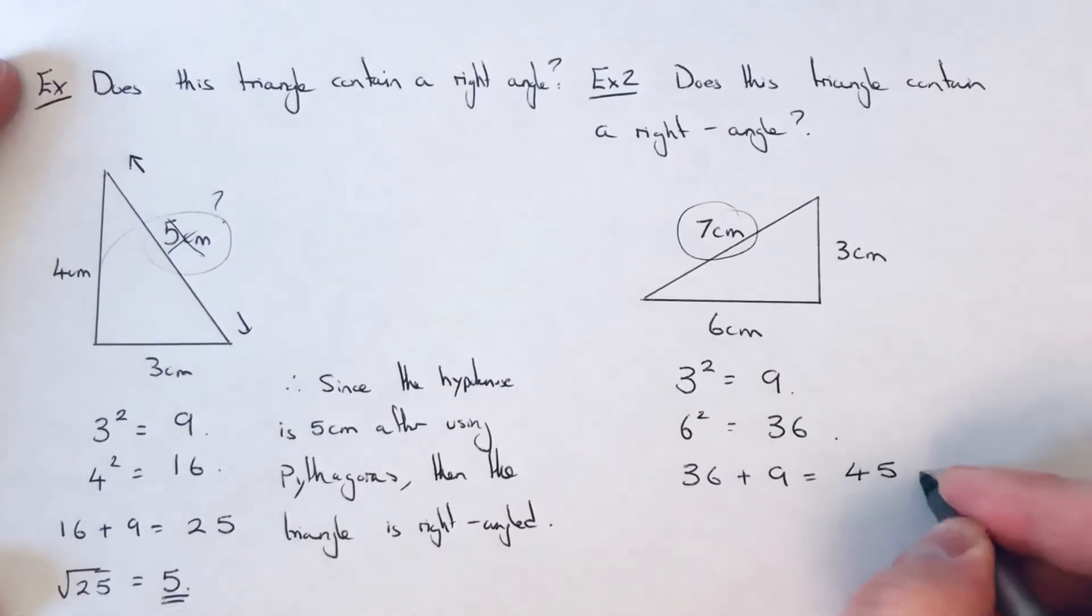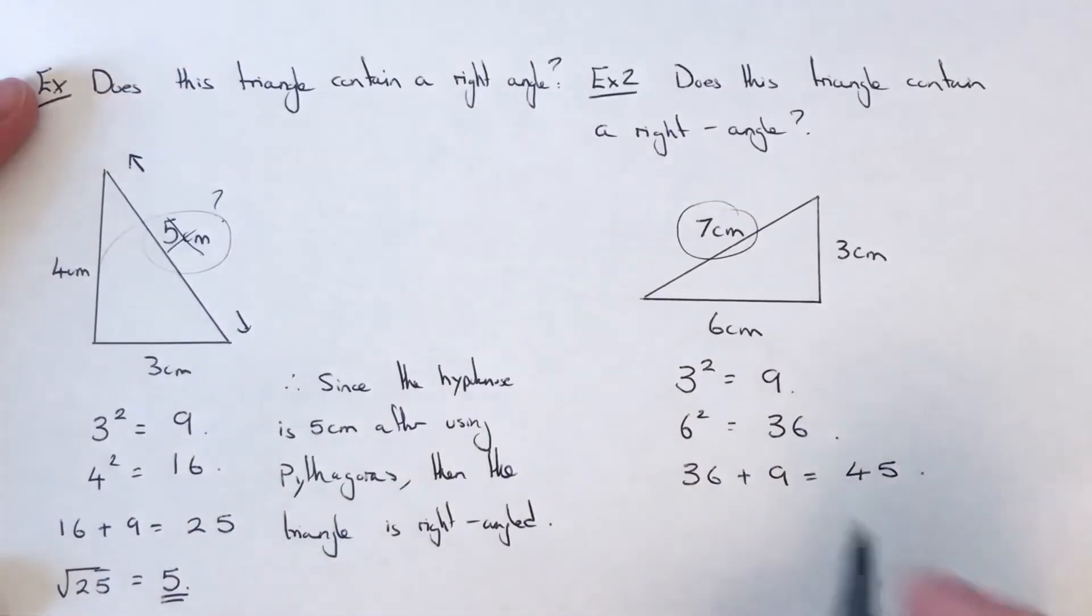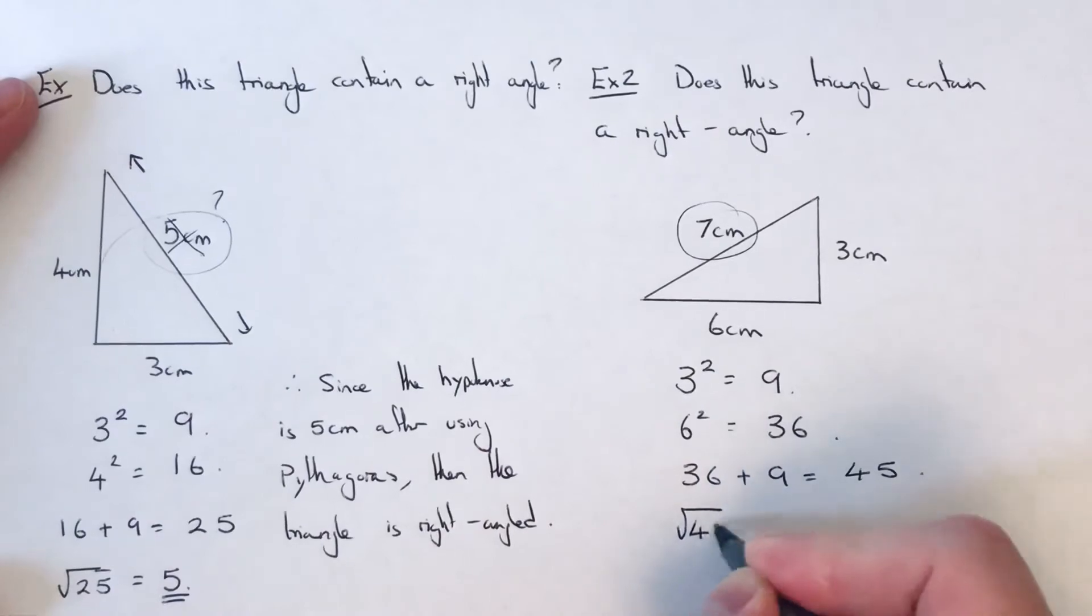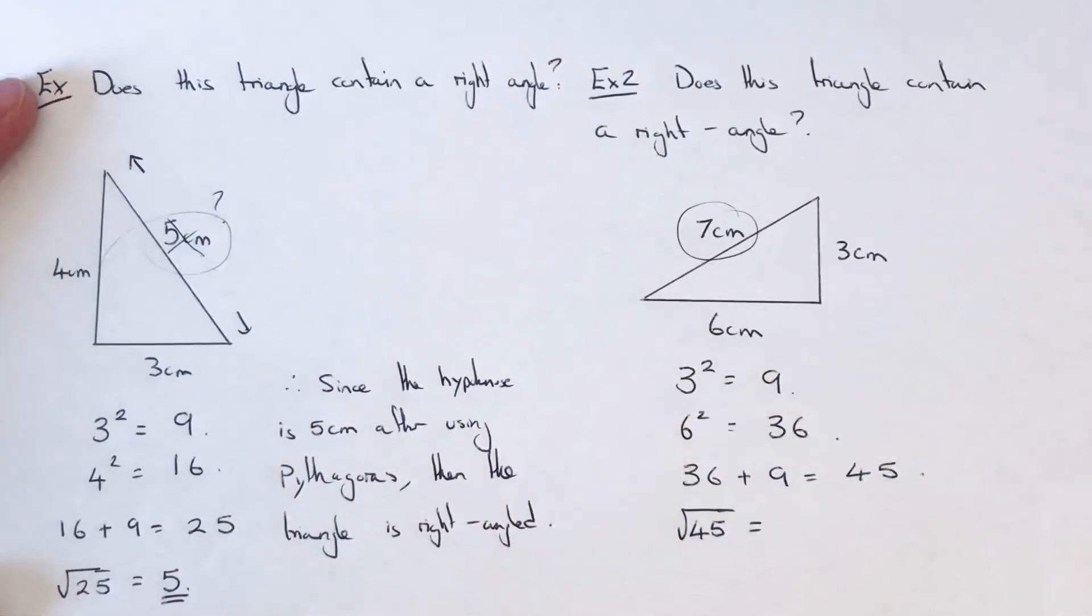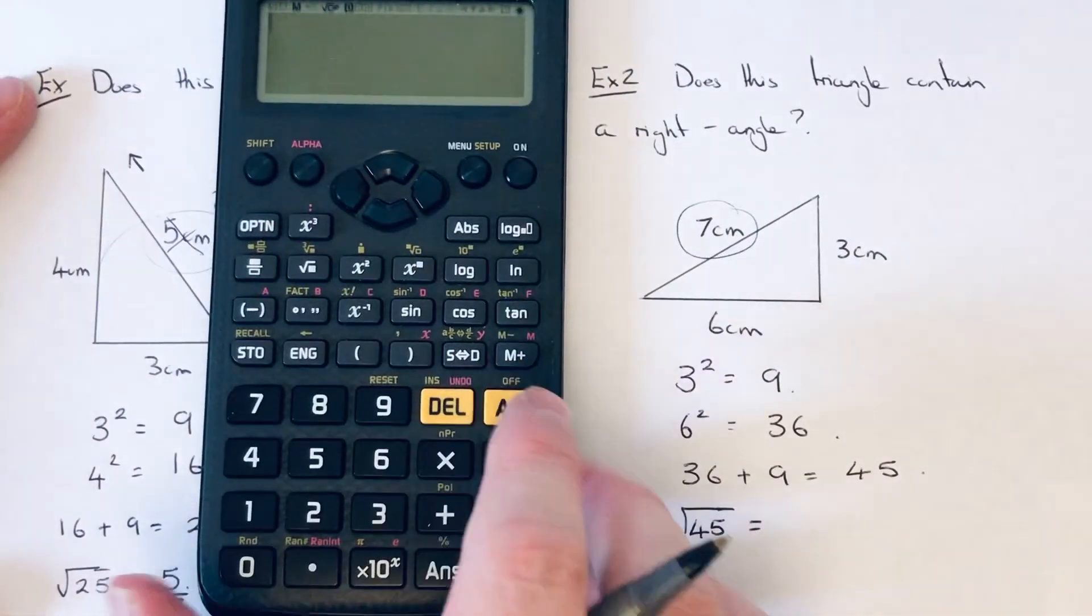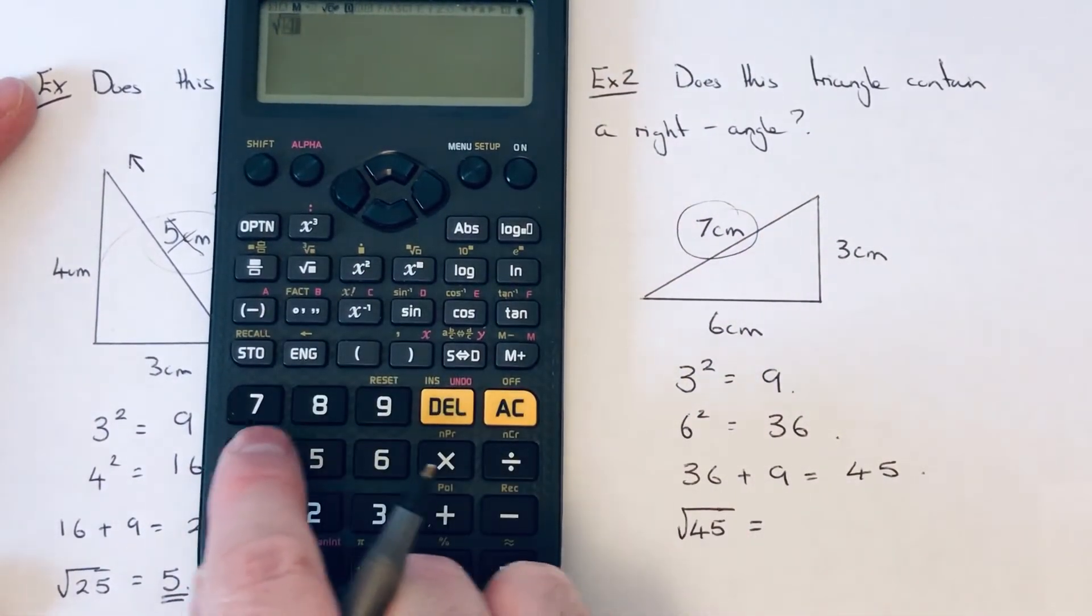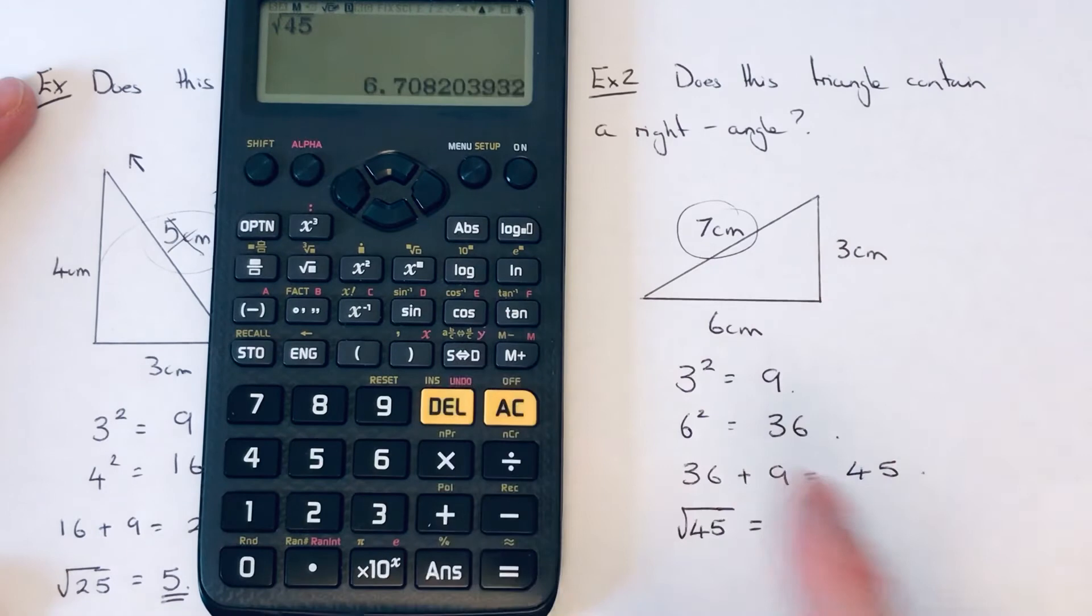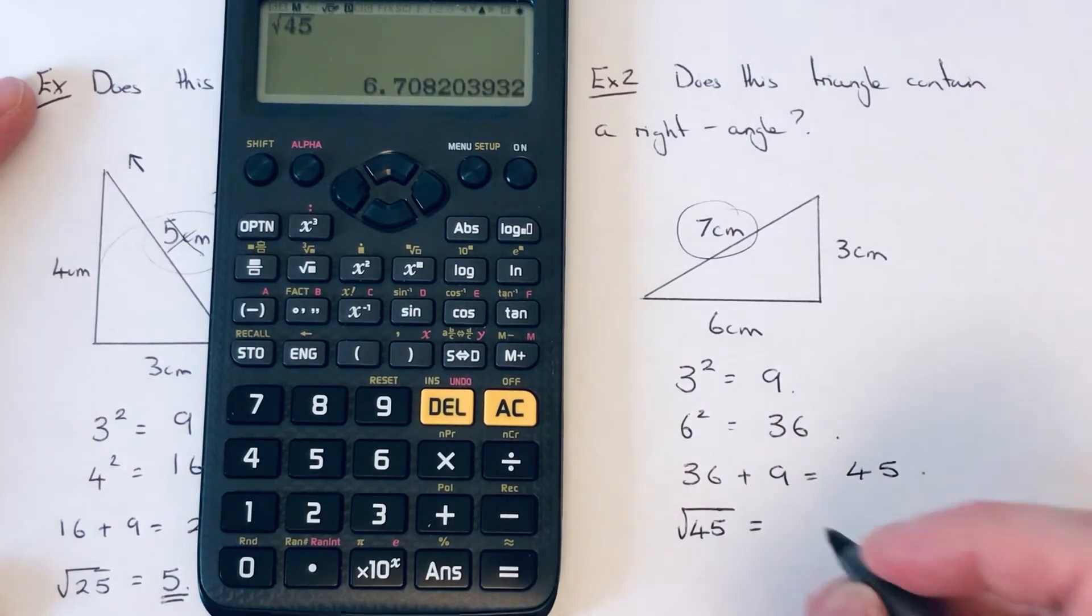If we add these together, because we're working out the longest side, that's 45. Then we need to square root that answer. So 45 is not a square number, so let's just do that on the calculator. Square root of 45 is 6.71.